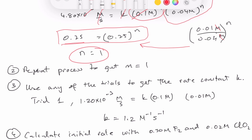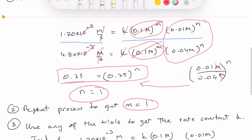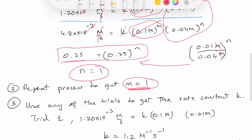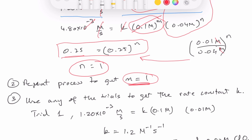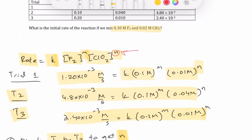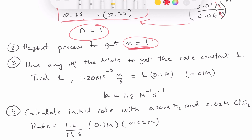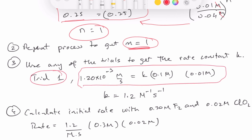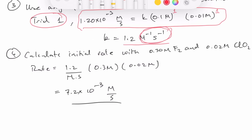We repeat the same process to get the value of M — find two equations where ClO₂ concentration is the same, divide them, and you should get M = 1 as well. Once we have both orders, we substitute known trial values into the rate law to solve for k. Using trial one: k = 1.2 with units of M⁻¹s⁻¹ (per molar per second). The rate law is now complete with both the rate constant and the orders.